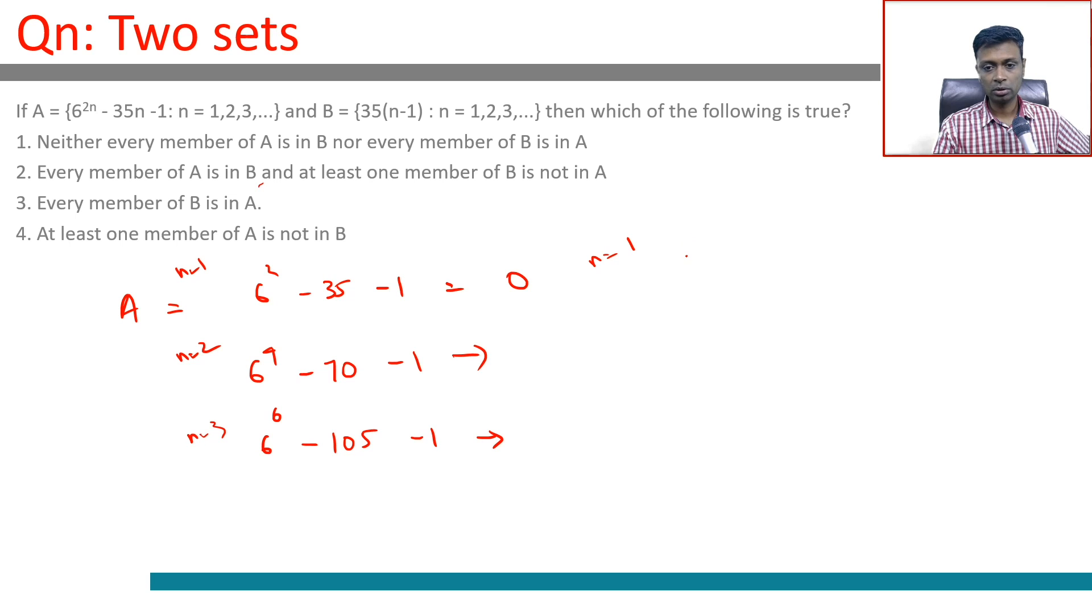B is 35(n-1), so 35×0. The first element will be 0. When n is 2, it is 35×1 = 35. When n is 3, 35×2 = 70.